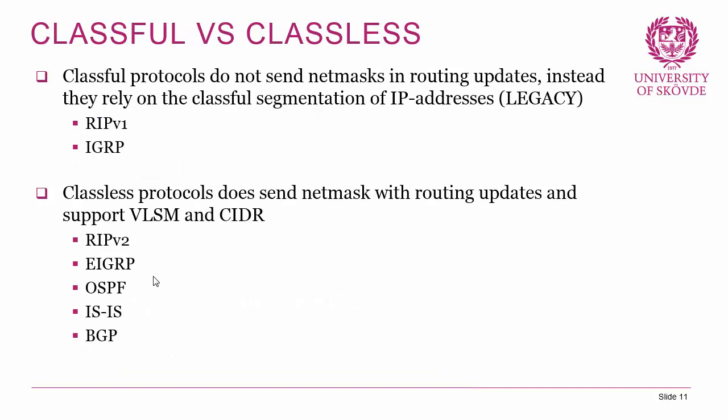Let's move on to discuss classful and classless routing protocols — this is mostly for historical overview. Classful protocols do not send the subnet mask in a routing update; instead they rely on the classful segmentation of IP addresses. This is only the case for the legacy protocols: RIP version 1 and IGRP. The behavior is that you need to segment your network according to classful segmentation with Class A, B, C networks and so forth — otherwise if a 10.x.x.x network is being advertised, the RIP v1 and IGRP process will assume the classful mask belonging to that network. However, all modern protocols are classless, which means they do send the subnet mask with the routing update and therefore support VLSM and classless interdomain routing.